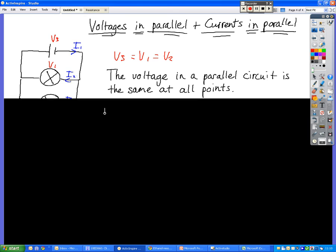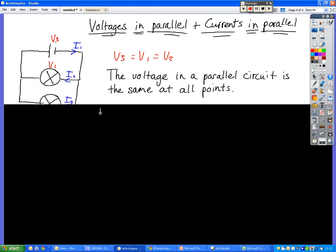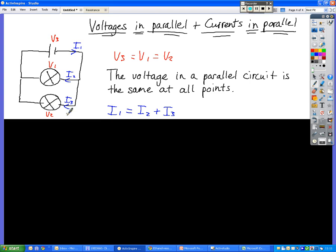If we look at voltage first of all, if we take a voltage of VS across the battery and we take the voltage with a voltmeter across both of these bulbs, then we find that they are all equal to each other.